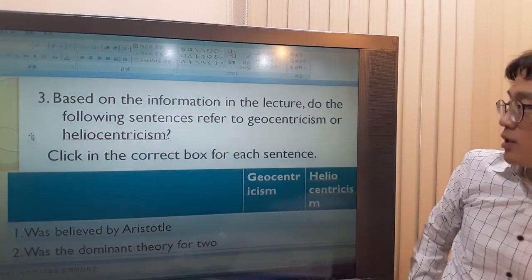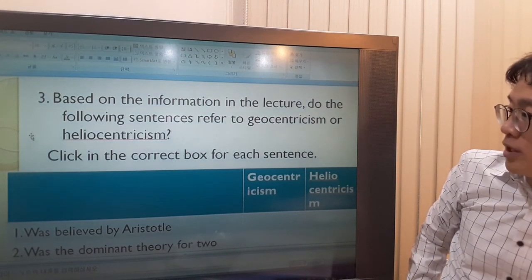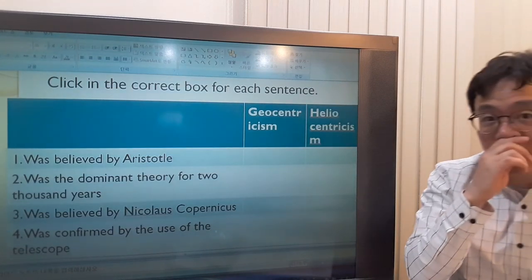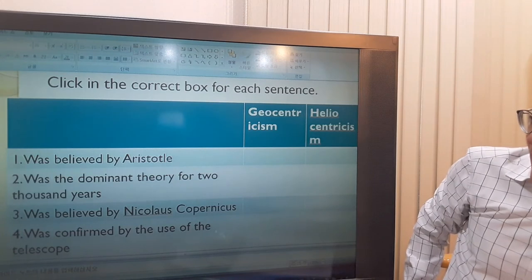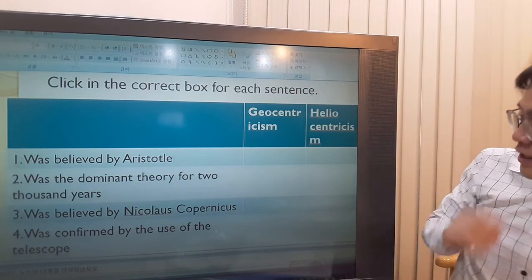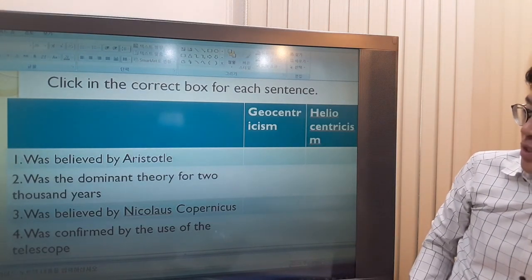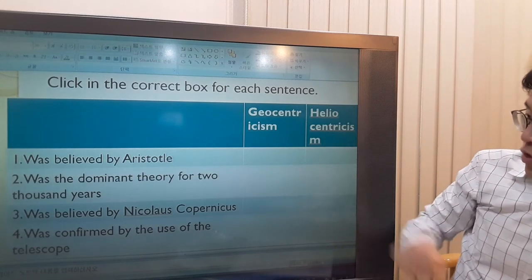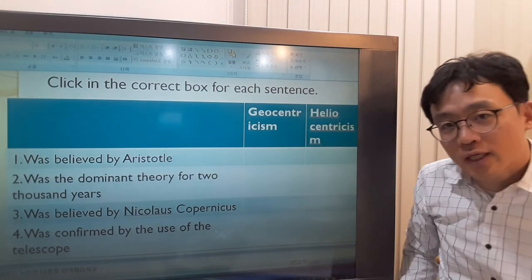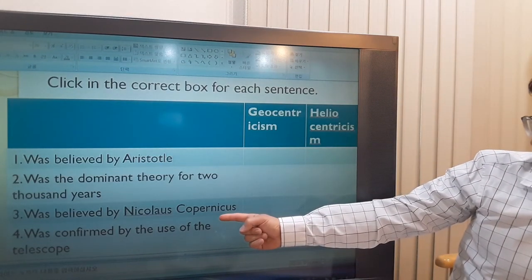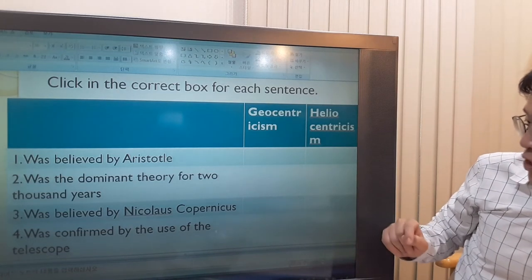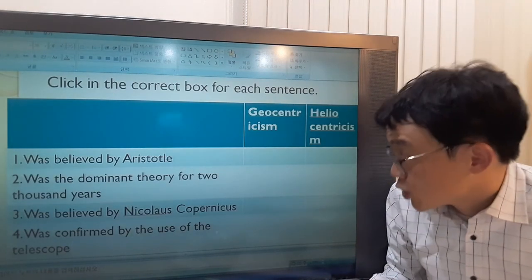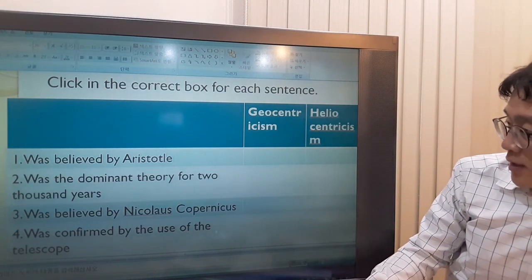Based on the information in the lecture, do the following sentences refer to geocentrism or heliocentrism? Was believed by Aristotle - which one did Aristotle believe in? Geocentric one. It was believed for 2,000 years - also geocentrism. What was the dominant theory for 2,000 years? Also the geocentrism. Dominant means ruling. Was believed by Nicolaus Copernicus - he believed in heliocentrism. He was the one who challenged the geocentrism. Was confirmed by the use of the telescope - which one was? Heliocentrism, by Galileo Galilei.